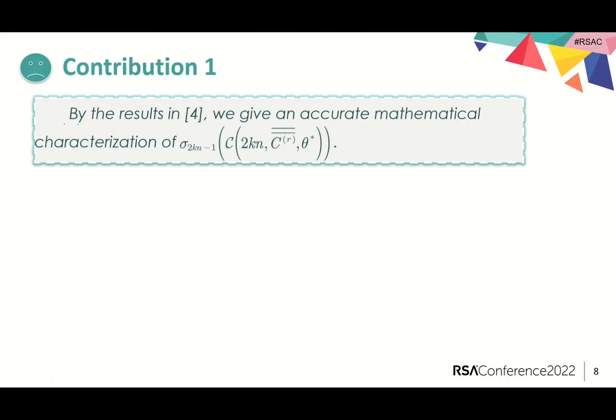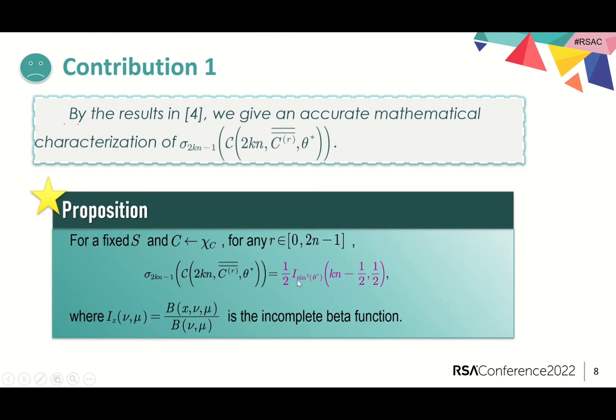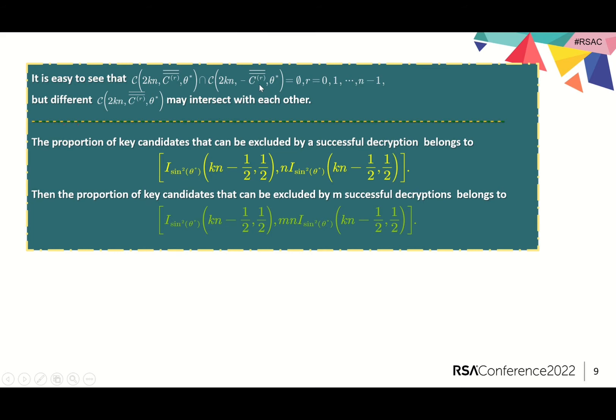By the results in a paper from Li, we gave an accurate mathematical characterization of this proportion by the so-called incomplete beta function I. It is noted that this function can be effectively calculated using software such as MATLAB. It is easy to see that the two positive and negative spherical caps above the same rotation of c are disjoint. However, caps above different rotations may intersect with each other. So, the proportion of key candidates that can be excluded by a successful decryption belongs to this range.